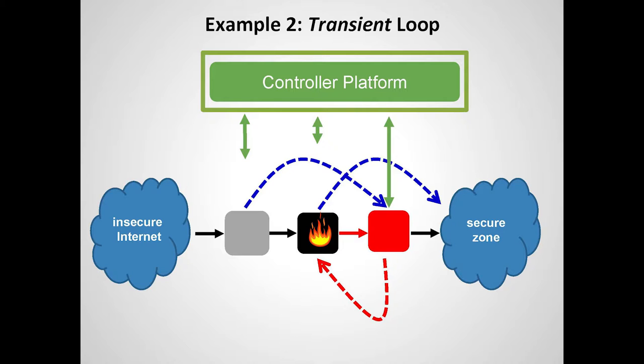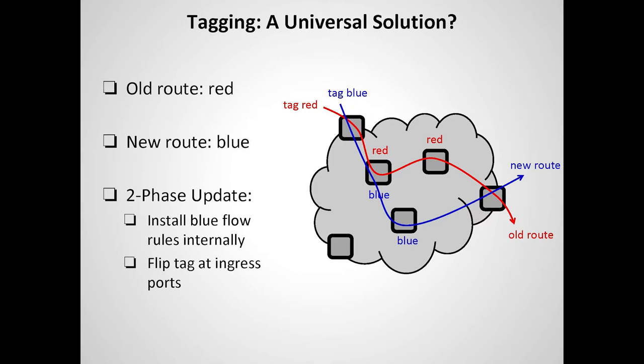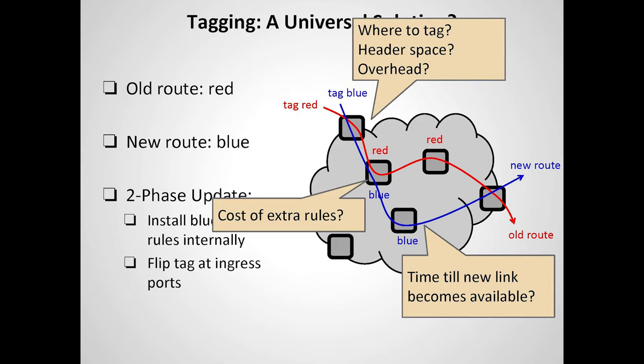On the other hand, if another rule takes effect first, packets exiting the firewall end up in a transient loop, which is also undesirable. These are transient inconsistency properties you don't want. Early works in this area proposed a two-phase commit protocol, a per-packet consistency approach: first install the new blue rules at internal switches, wait for them to take effect, then change the ingress port to mark new packets with a blue tag. Accordingly, packets follow the blue path. The tagging approach has overhead: you need header space, and twice as many rules at the switch.